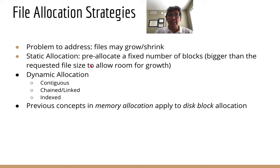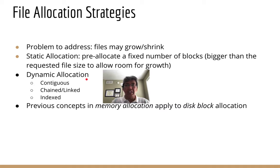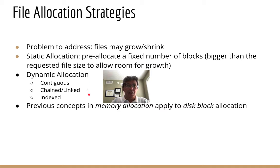The first one is static and the second one is dynamic. In static allocation, the file system pre-allocates a fixed number of blocks that will not change throughout the lifetime of your file or directory. In dynamic allocation, the file system allocates a minimum number of blocks to fit the required size. When your file or directory grows, the file system will add more blocks. When they shrink, disk blocks will be taken away. Under this strategy, we will look at three different algorithms: contiguous, chained or linked, and indexed.